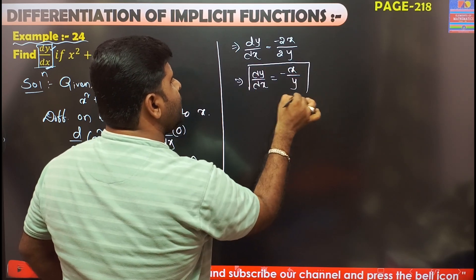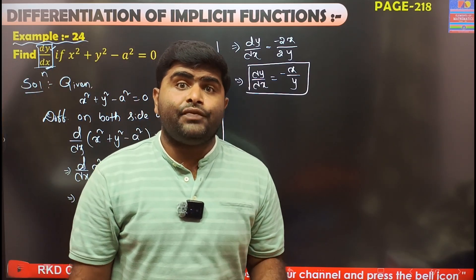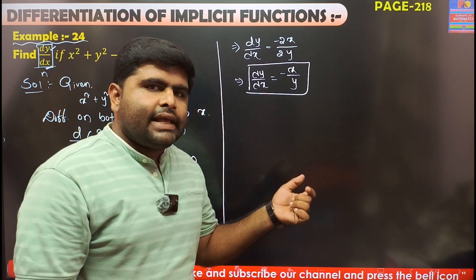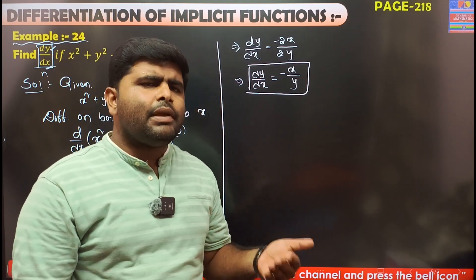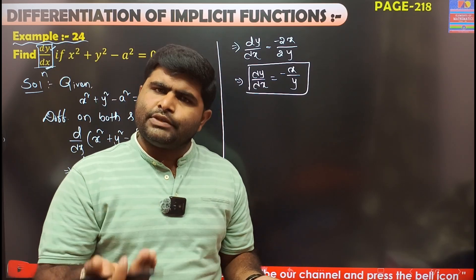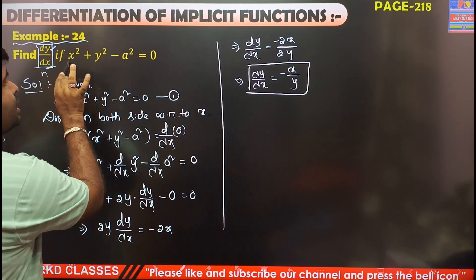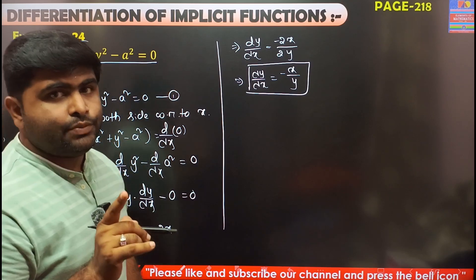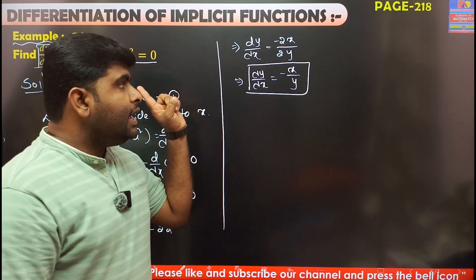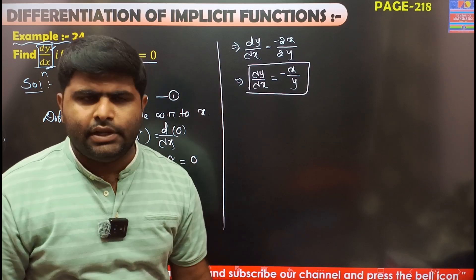Now look at the previous question, which was an explicit function — you had a y value in terms of x, and the x value in terms of y. Now look at the derivative value: it contains both x and y. We are independent with respect to x, and the answer is in terms of both x and y. So the implicit function derivative gives an answer in the combination of x and y. The question is simple.